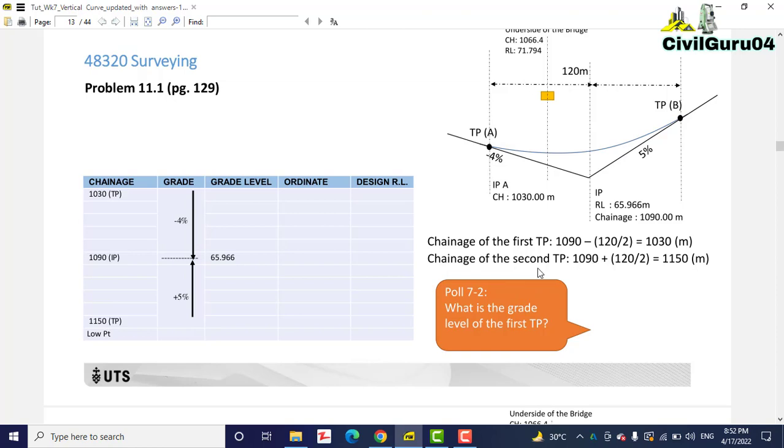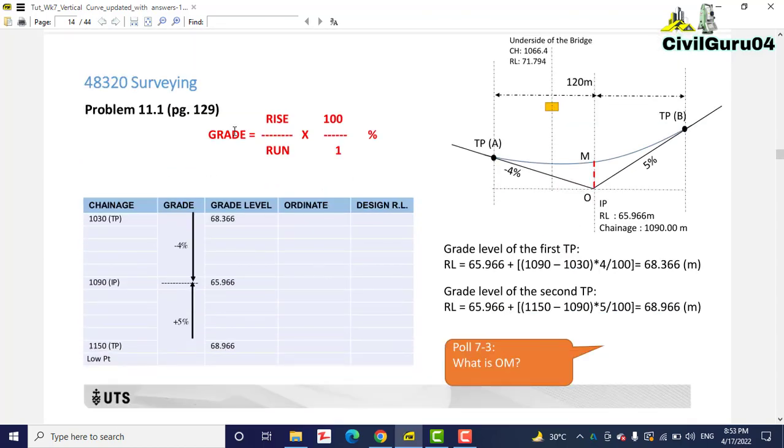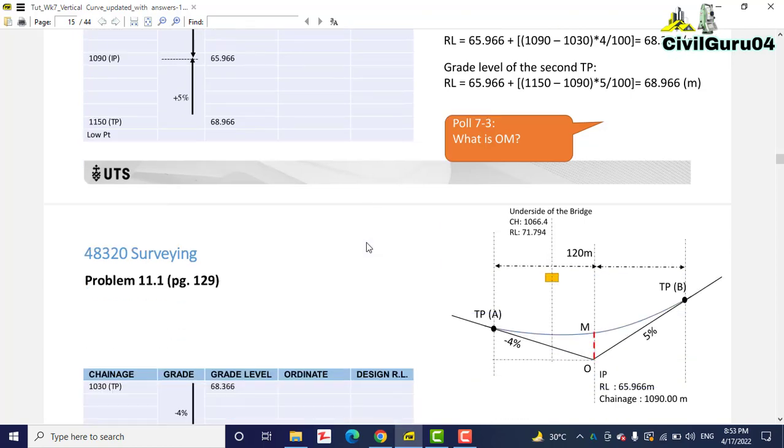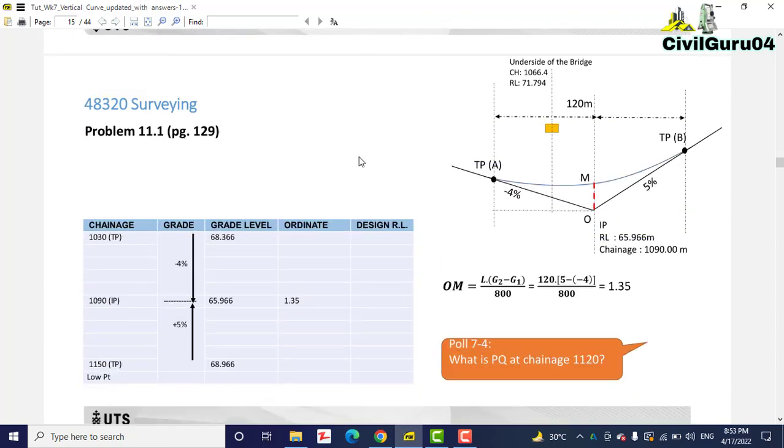Then we will calculate another chainage for second TP with this formula. You can see we have grade of minus 4% and then 5% for grade 2. We will use this formula to calculate our elevation grade level on first TP and another TP. You need to follow this procedure step by step to make your concept clear for the vertical curves. If you see overall all the formula you will not get that, you just need to go with this procedure step by step.